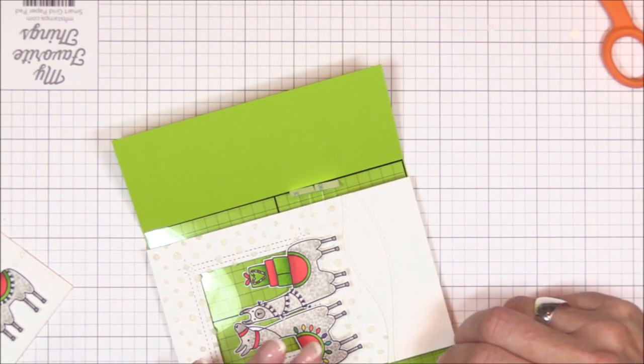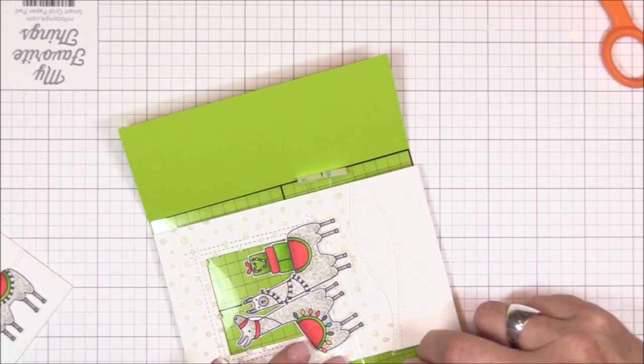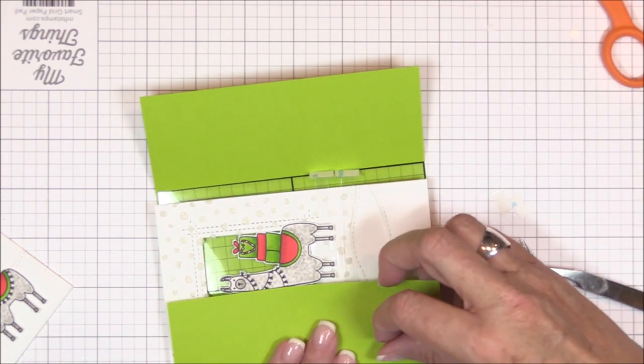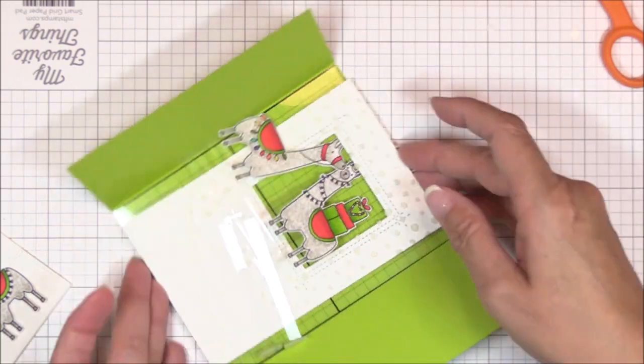And once again, that A2 acetate grid sheet is a lifesaver as it really helps me make sure those tabs are aligned properly.